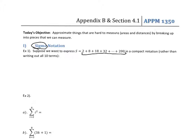Before we write sigma notation, notice that in this particular problem I can pull out a 2 — just factor it out from each term. And then I'm left with 1 plus 4 plus 9 plus 16 plus 100. I want you to see if you can tell me what the next term should be and identify the overall pattern. Put this on pause.